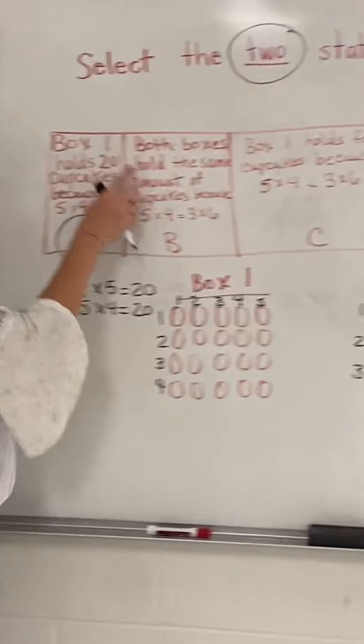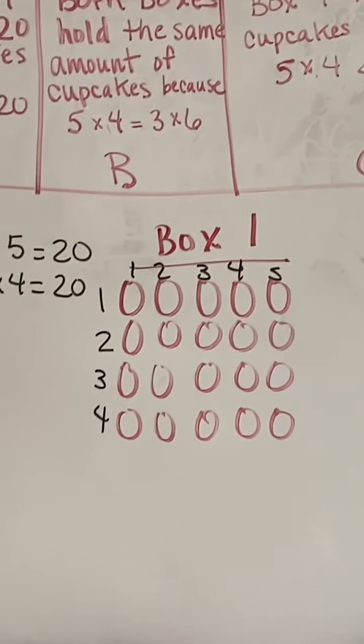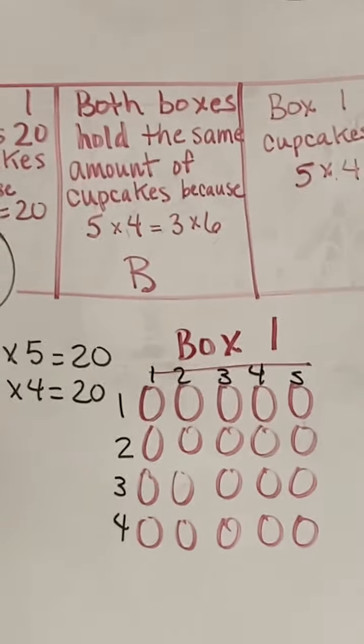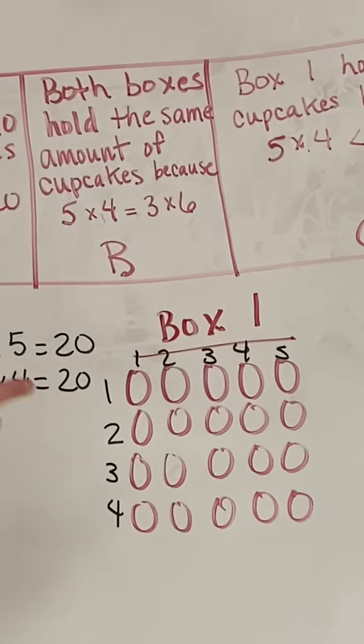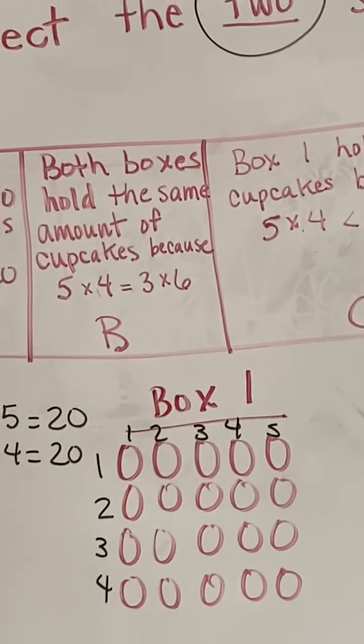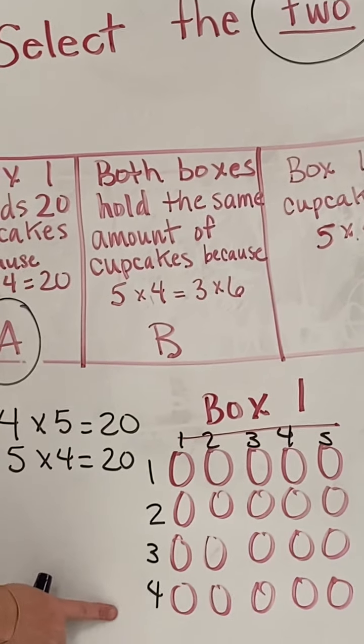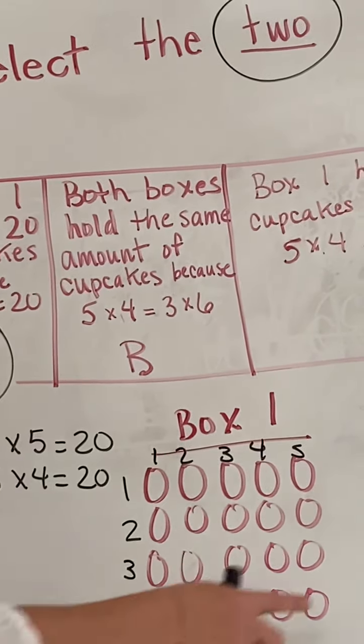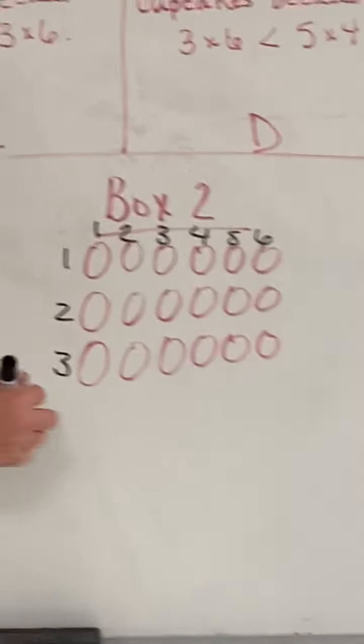Let's look at the next one. Both boxes hold the same amount of cupcakes because 5×4 is equal to 3×6. Well, we just figured out that 5×4 is 20. So we know this box holds 20. So let's work this one and see how many cupcakes are in this one.